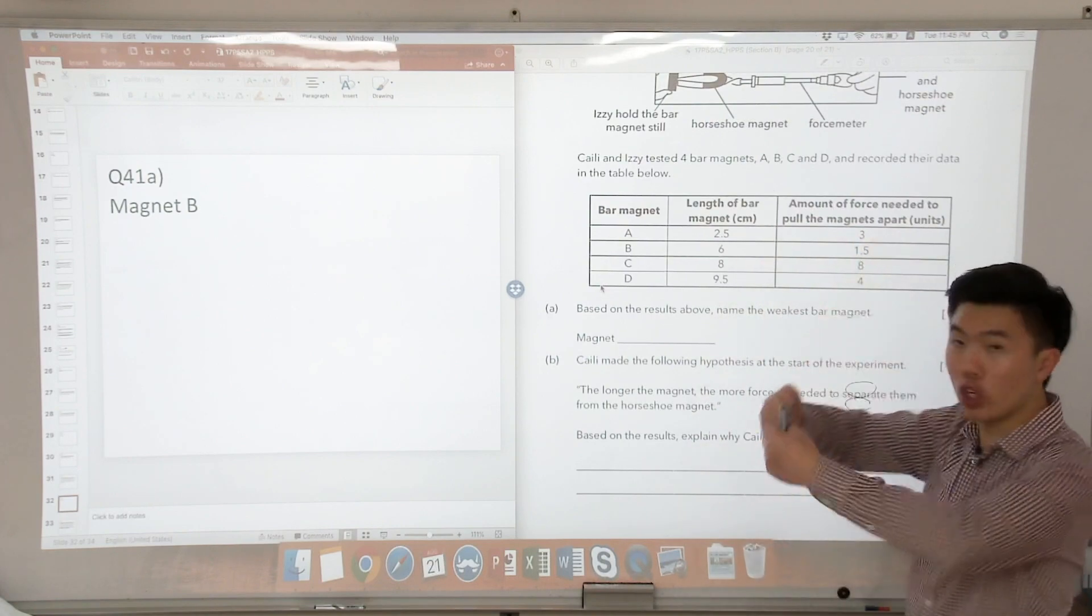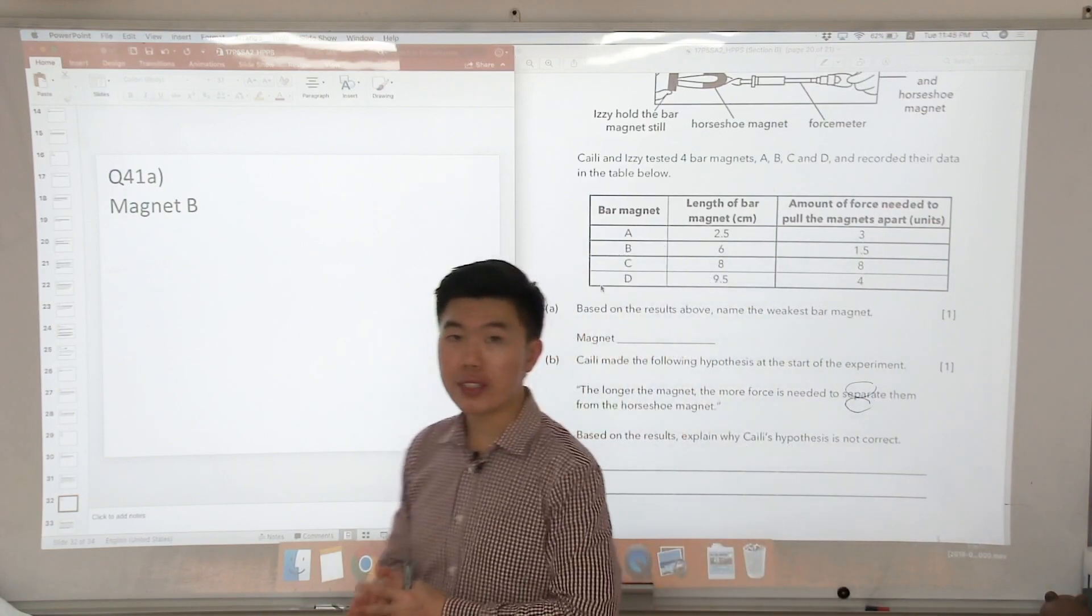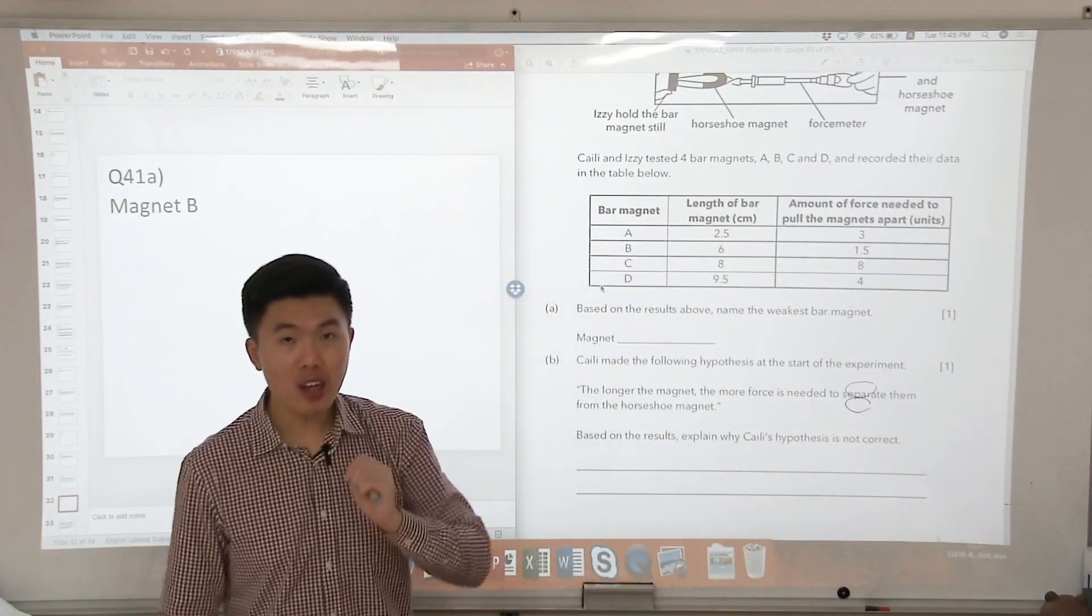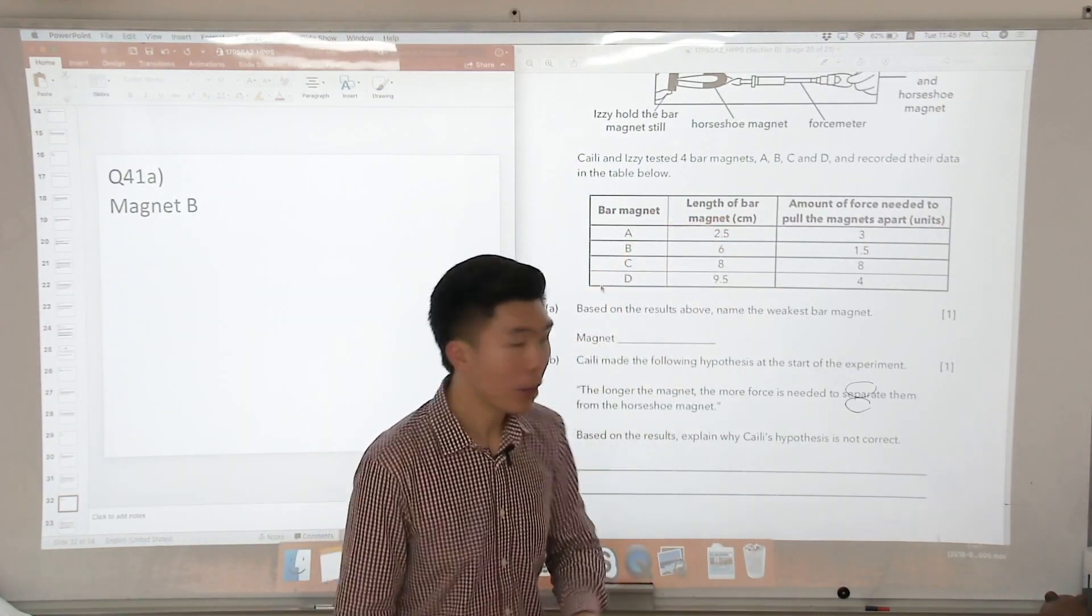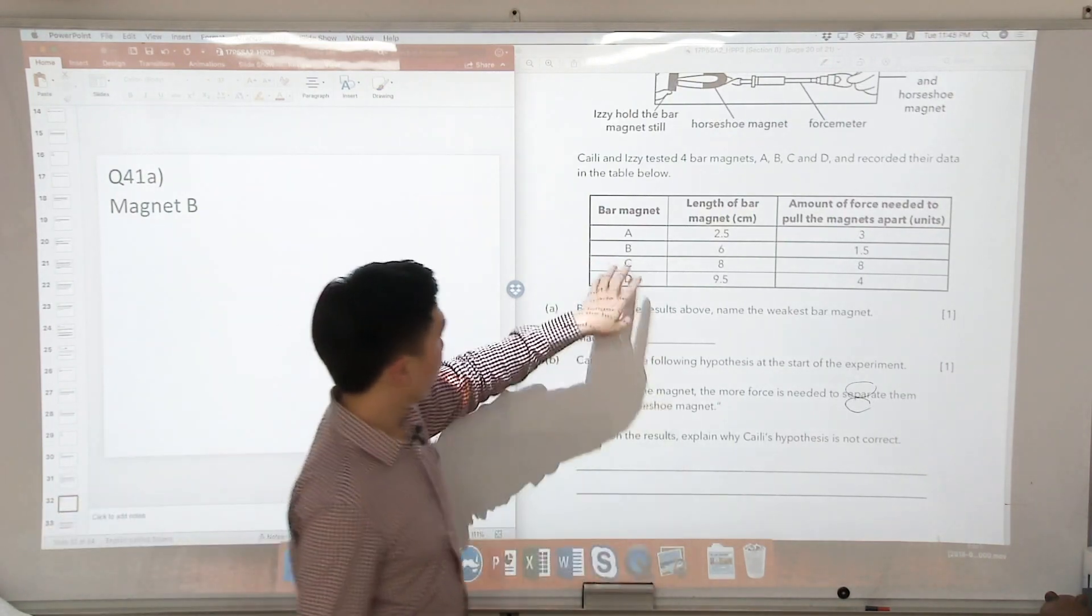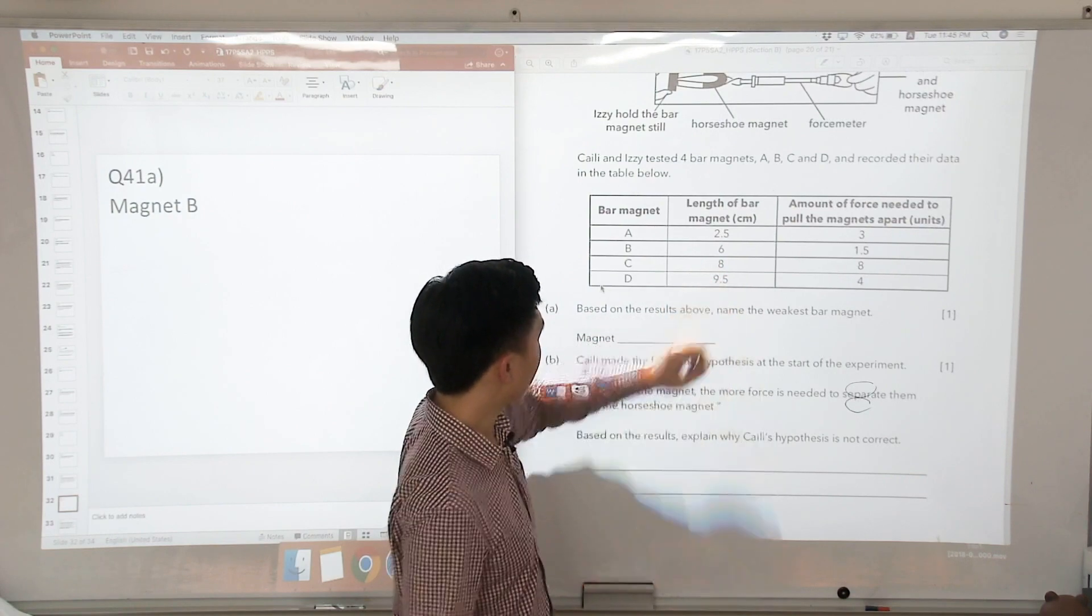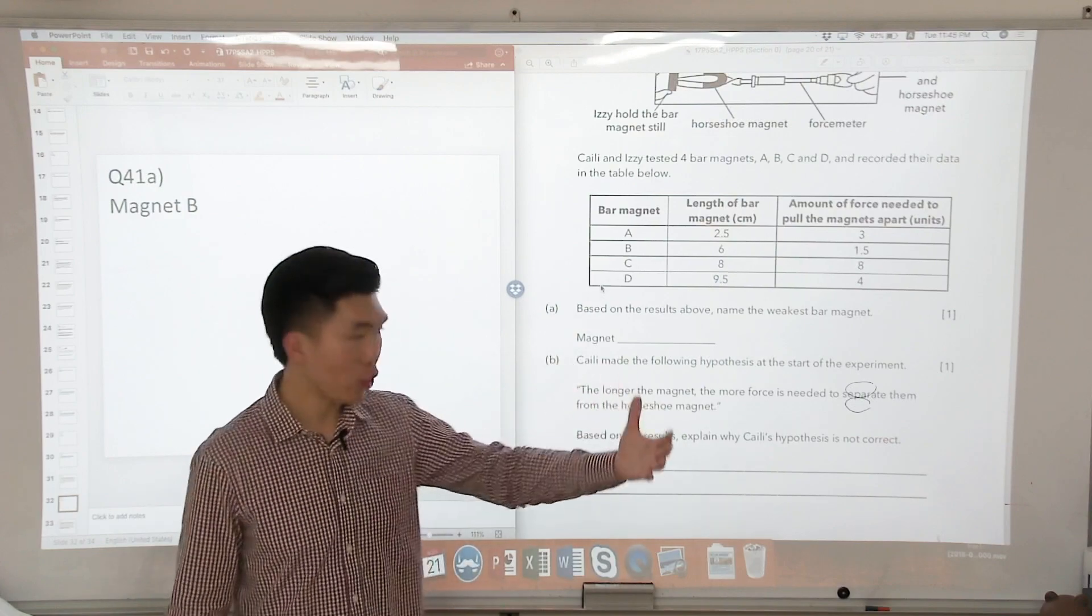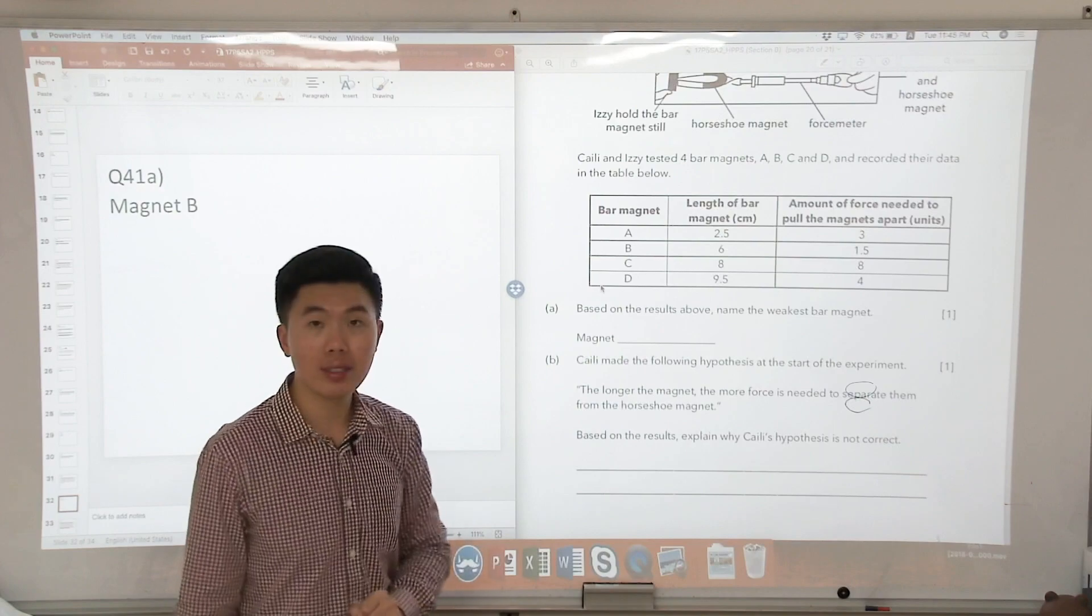But if you look at the amount of force needed to pull the magnets apart, A actually required a greater amount of force. This means that A is shorter but A is stronger. The magnetic strength of bar magnet A is stronger. So now if we were to compare C and D, C has a shorter length than D. So you would expect that C's bar magnet's magnetic strength is going to be weaker than that of D, based on Kylie's hypothesis.